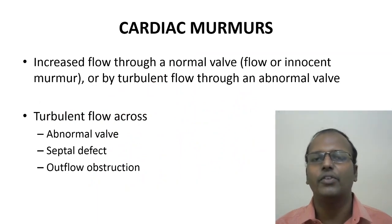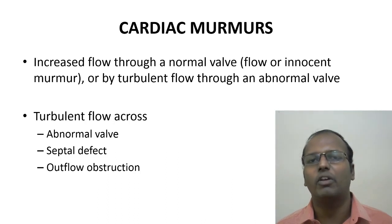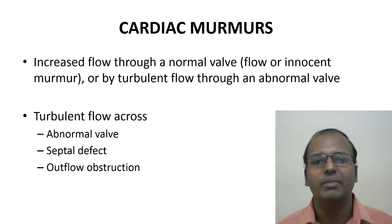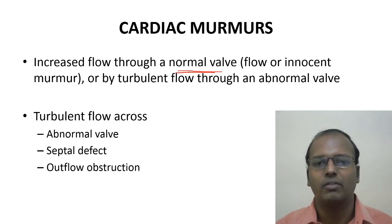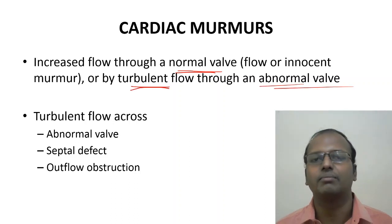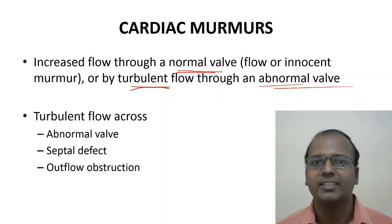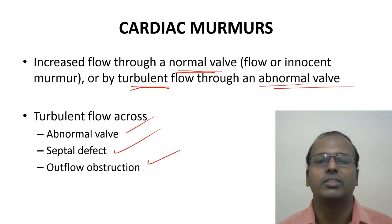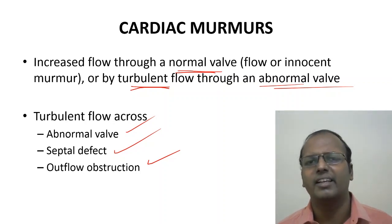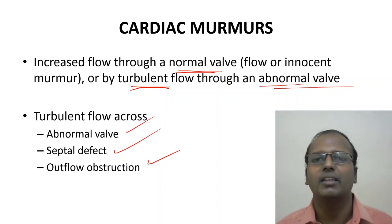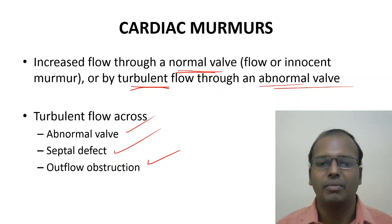A murmur is produced when there is increased flow through a normal valve, or turbulent flow through an abnormal valve — similar to squeezing a garden hose causing turbulent water flow and sound. Turbulent flow occurs across an abnormal valve, septal defect, or outflow obstruction. A palpable murmur is called a thrill. In VSD, the large pressure difference between left and right ventricles — not the defect per se — produces the murmur.